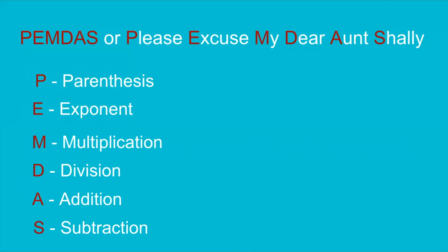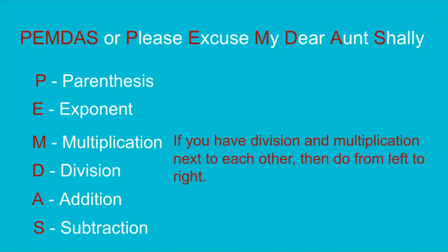If we have all the operations in one problem, we are supposed to do parenthesis first. Once we get rid of the parenthesis, it will be exponent, then multiplication and division, then addition and subtraction. But if we have multiplication and division in the same step next to each other, we have to go from left to right.